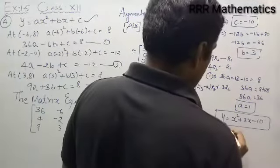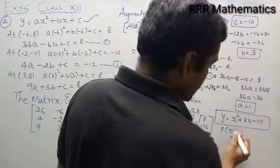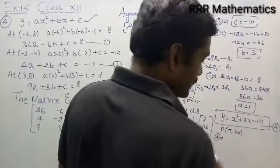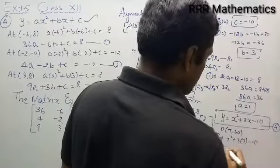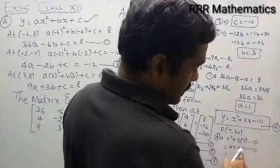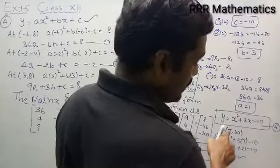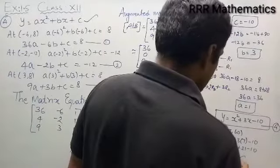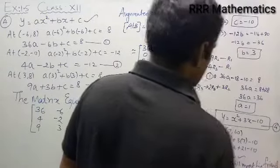Substituting x = 7: y = 7² + 3(7) − 10 = 49 + 21 − 10 = 70 − 10 = 60. When x = 7, y = 60, which matches the point (7, 60). So he will meet his friend.